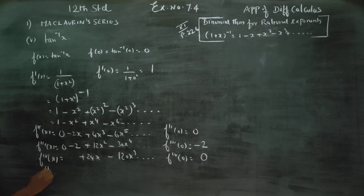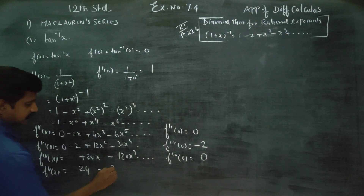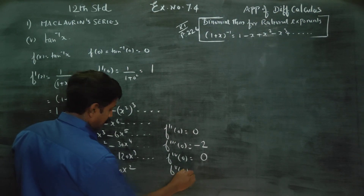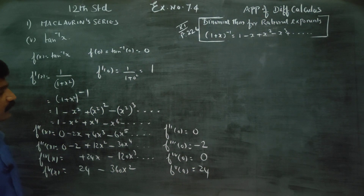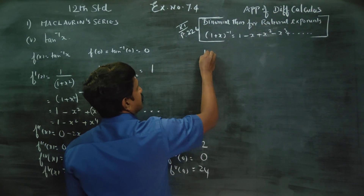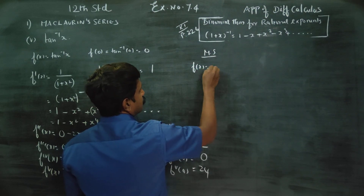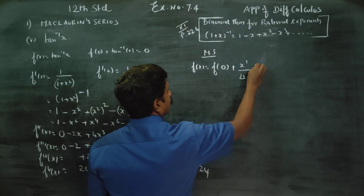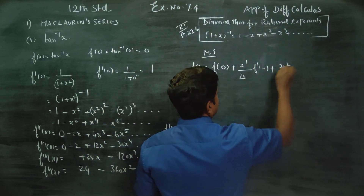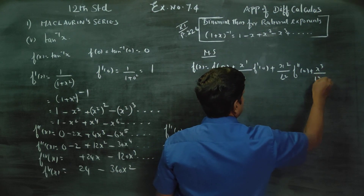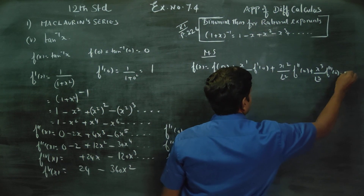The Maclaurin series expansion is: f of 0 plus x by factorial 1 into f dash 0, plus x squared by factorial 2 into f double dash 0, plus x power 3 by factorial 3 into f triple dash 0, and it goes on.